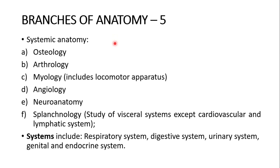This is the last slide for branches: systemic anatomy, dealing with the system. This includes osteology, arthrology, myology — which also includes the locomotor apparatus — angiology, neuroanatomy, and splanchnology. Splanchnology is the study of the visceral system except the cardiovascular and lymphatic systems. Systems include the respiratory system, digestive system, urinary system, genital system, and endocrine system.